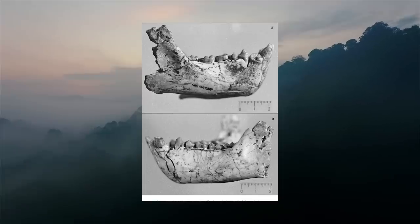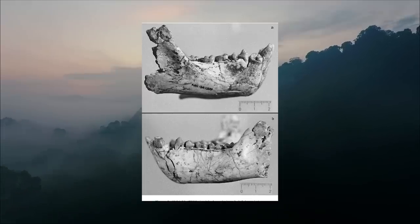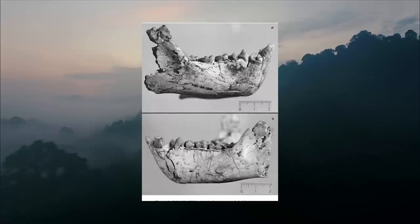However, caution must be exercised, as sexual dimorphism or lack thereof can only be appropriately assessed with sufficient sample sizes of teeth or post-crania. Case in point, there was originally a lot of debate around the Proconsul fossils found at Rusinga Island as to whether there were two sexes or two species present.